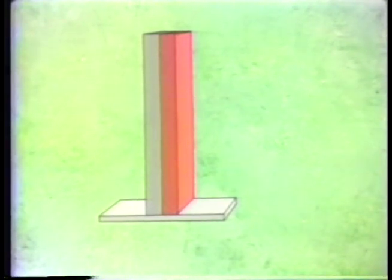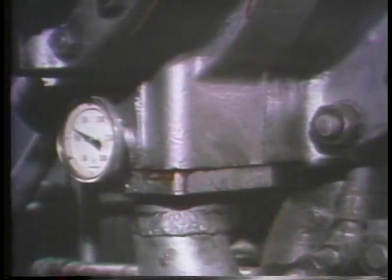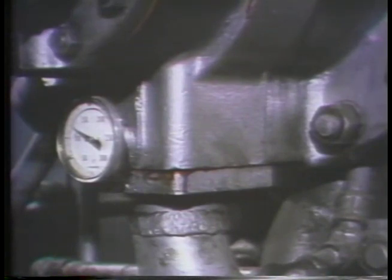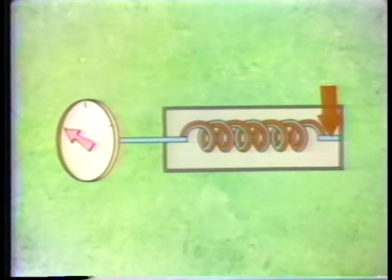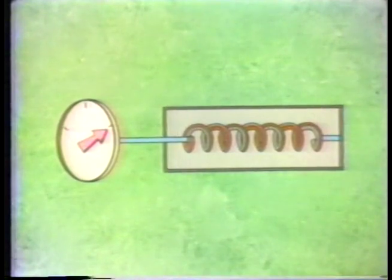When the temperature around the sensing element changes, the two metals expand or contract at different rates, causing the element to move. This movement is in direct proportion to the temperature change. Most bimetallic thermometers used in the plant are more complicated — for example, this one contains a bimetallic element which is helically wound. The helical shape produces a long, slender sensing element which allows for good penetration into a thermowell or directly into whatever is being measured. One end is fixed in position while the other end is connected to a rod and pointer. Changes in temperature cause the element to coil or uncoil, resulting in rotation of the rod, and the pointer indicates the temperature.